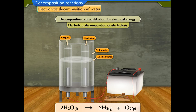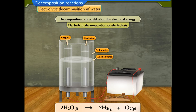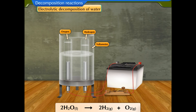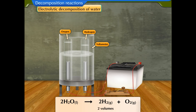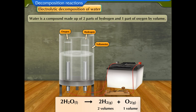Water can be decomposed into hydrogen and oxygen by the process of electrolytic decomposition. The electrolysis of water produces two volumes of hydrogen gas and one volume of oxygen gas. This shows that water is a compound made up of two parts of hydrogen and one part of oxygen by volume.